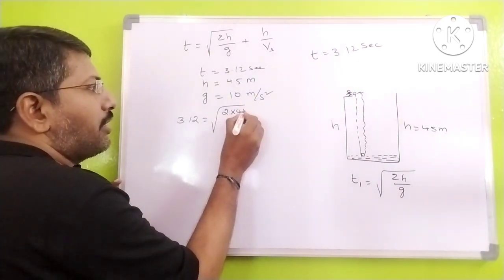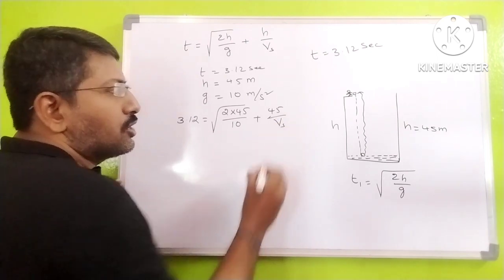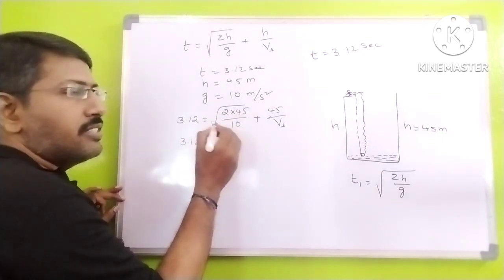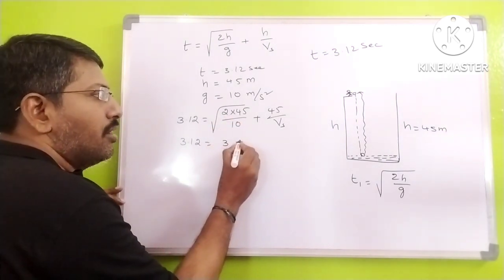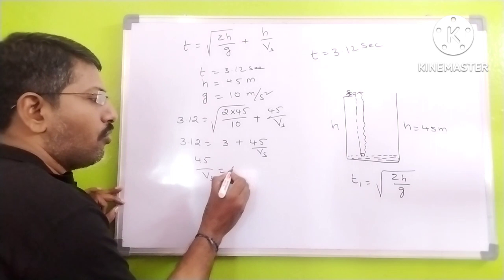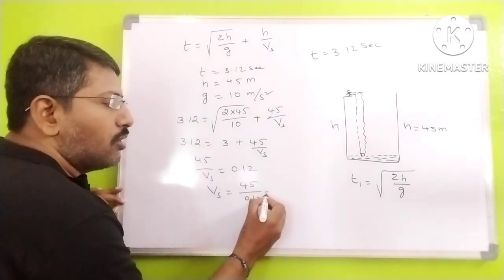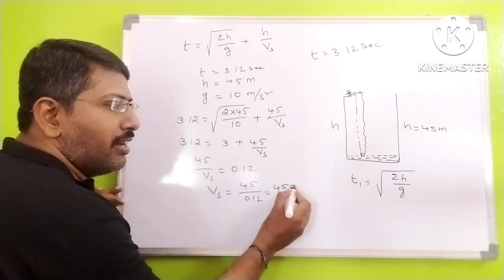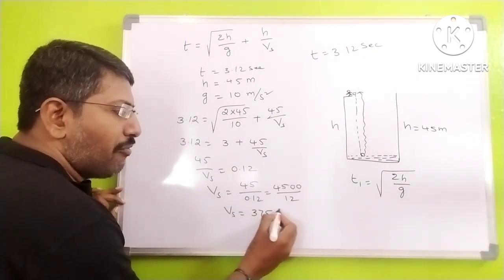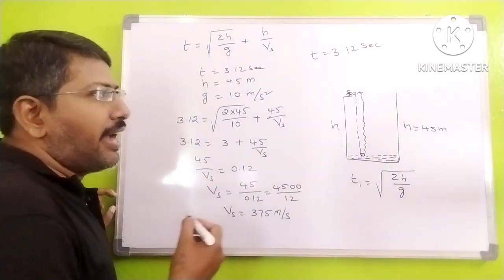Substituting the data: 3.12 equals square root of 2 times 45 divided by 10, plus 45 divided by v_s. Simplifying, square root of 90 by 10 equals square root of 9 equals 3. So 3.12 minus 3 equals 0.12, which equals 45 divided by v_s. Therefore, the speed of sound equals 45 divided by 0.12, which gives 375 meters per second. Next I will explain one more problem based on kinematics. Thank you.